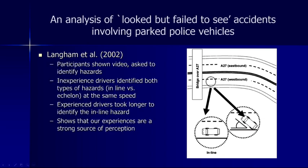Langham et al. found that participants shown this video and asked to identify hazards showed an interesting pattern. Inexperienced drivers identified both the inline and the echelon hazard at the same speed, whereas experienced drivers took longer to identify the inline hazard because they expected the car to be moving. Inexperienced drivers have not yet developed expectations about cars moving in a particular direction, so they were much more likely to identify the stopped car. This shows that our experiences are a strong source of perceptual bias.